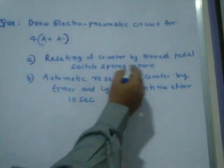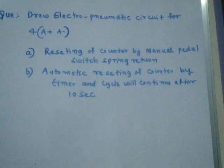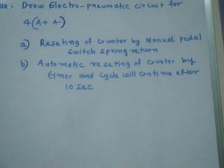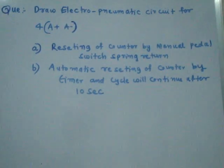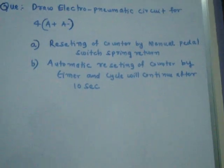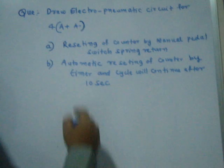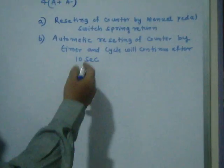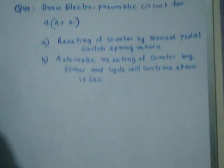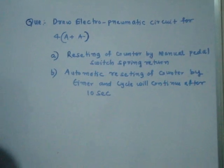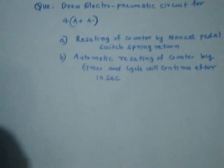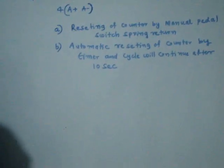Sometimes we don't know exactly how much time will be required for the second cycle, so we will go for manual resetting. Otherwise, if we know that between the first cycle and second cycle only 10 or 20 seconds is required, then we will make everything automatic.